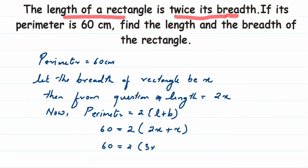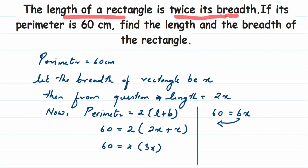2x plus x is nothing but 3x. Now multiply 2 into 3x, which is nothing but 6x. So we can write: 60 is equal to 6x. We want only the value of x, so I'm going to transpose this 6 to the other side. 6 in multiplication transposed becomes division, so it's 60 divided by 6.